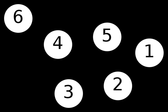A complete graph is a graph in which each pair of vertices is joined by an edge. A complete graph contains all possible edges.